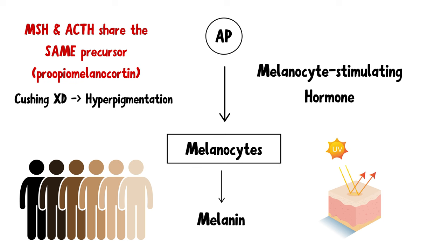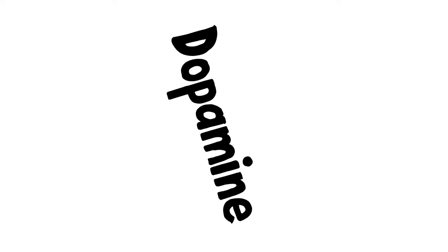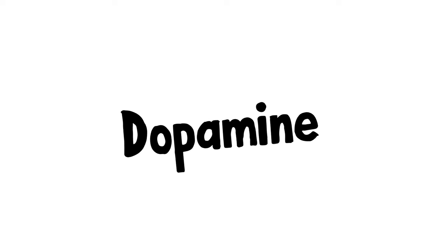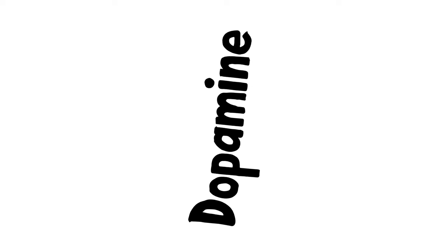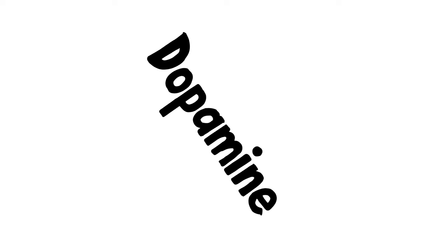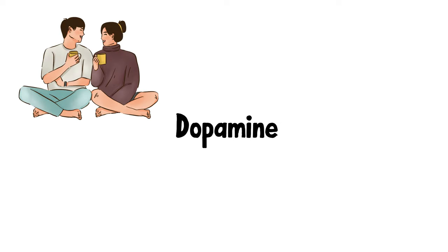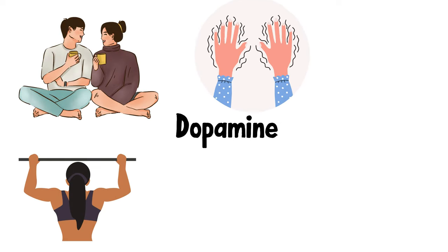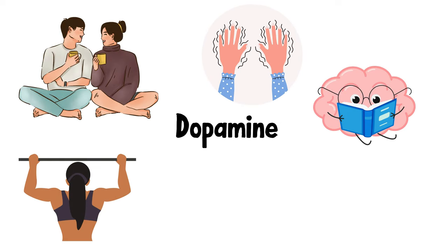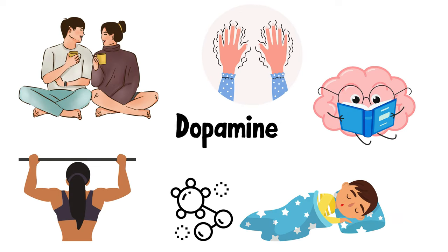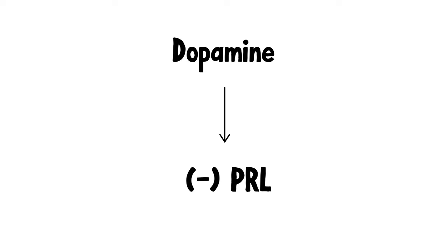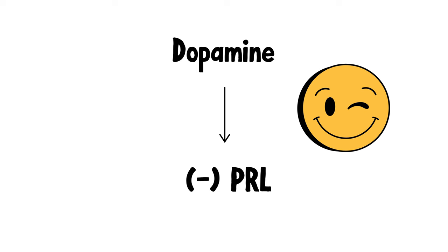Now let's move on to dopamine. Dopamine is our body's feel-good hormone that contributes to feelings of pleasure and reward. It's vital for mood, motivation, movement, cognition, hormone balance, and sleep regulation. A very important point to remember is that dopamine inhibits prolactin, which makes sense if you really think about it.